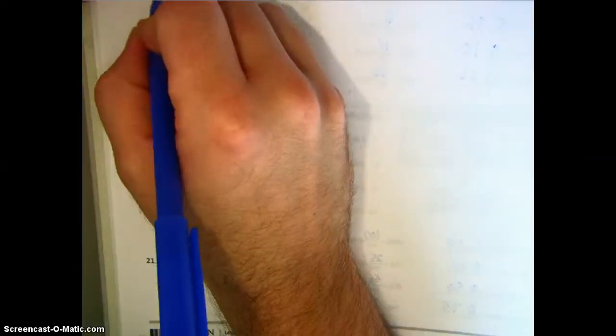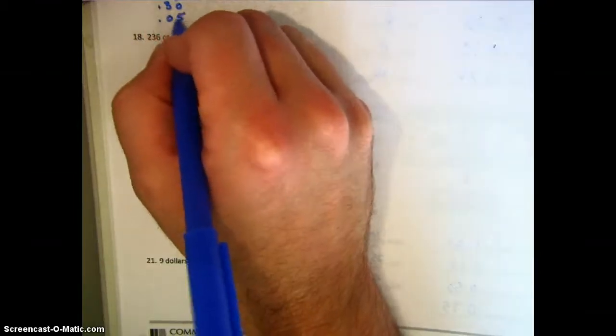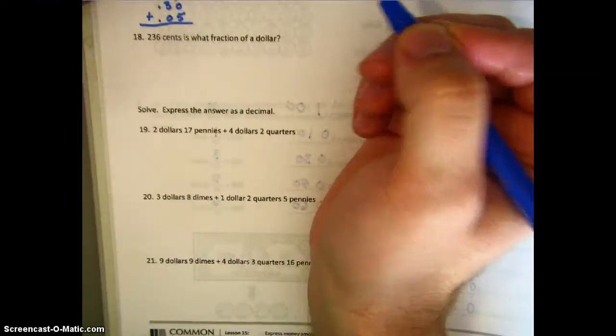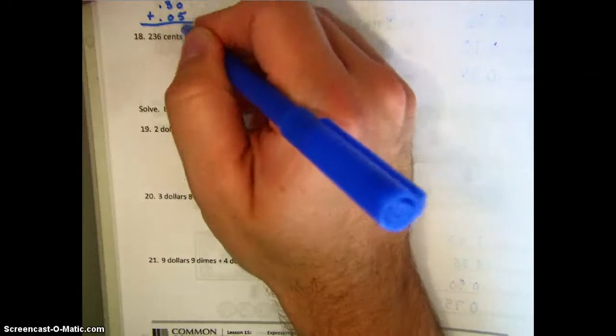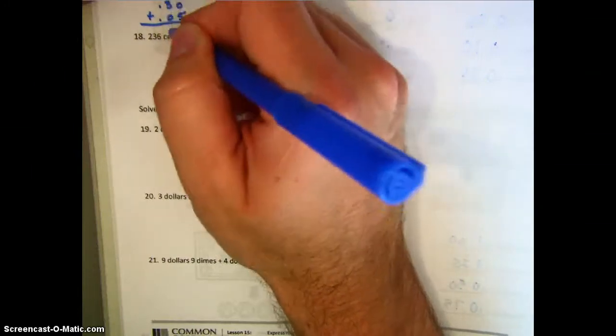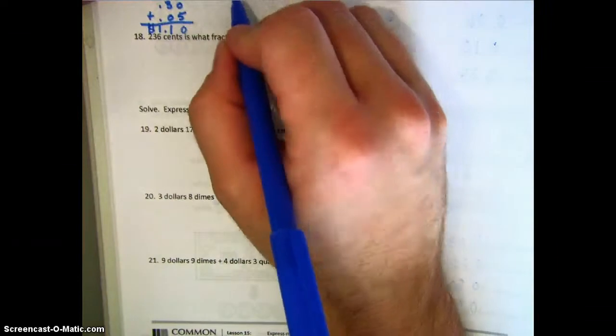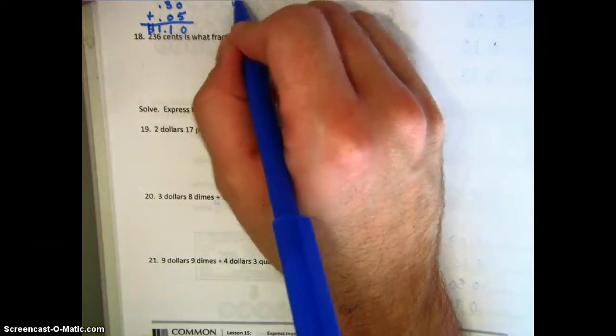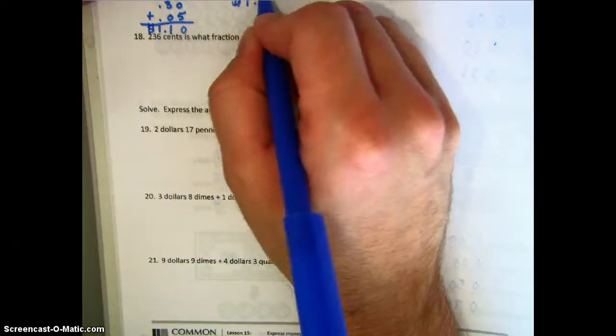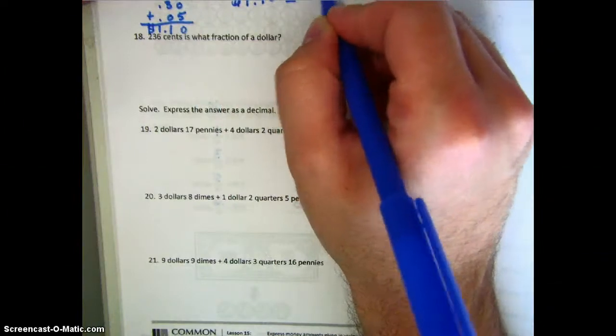Next, we have three quarters, which is seventy-five cents, plus three dimes, which is thirty cents, and then finally five pennies. Adding this all up, we see that we have one dollar and ten cents, or in fraction form, one hundred and ten hundredths.